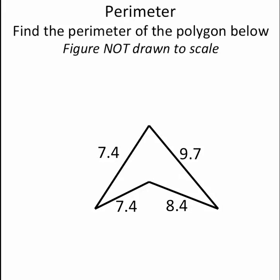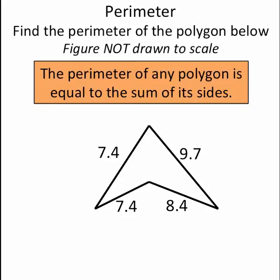This problem is asking us to find the perimeter of the polygon below. Remember that the perimeter of any polygon is equal to the sum of its sides. So to find the perimeter of a polygon, I simply have to add up its various sides.